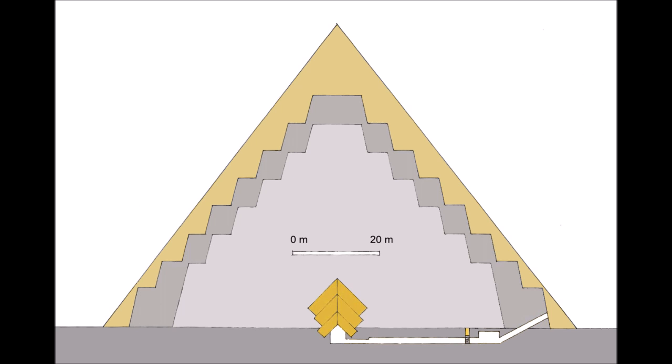On the basis of the site being the highest point, Neferirkare may have selected it to ensure his complex dominated the surrounding area. The site may have been intentionally selected to build a pyramid in line with Heliopolis. The Abusir diagonal is a figurative line connecting the northwest corners of the pyramids of Neferirkare, Sahure, and Neferefre.